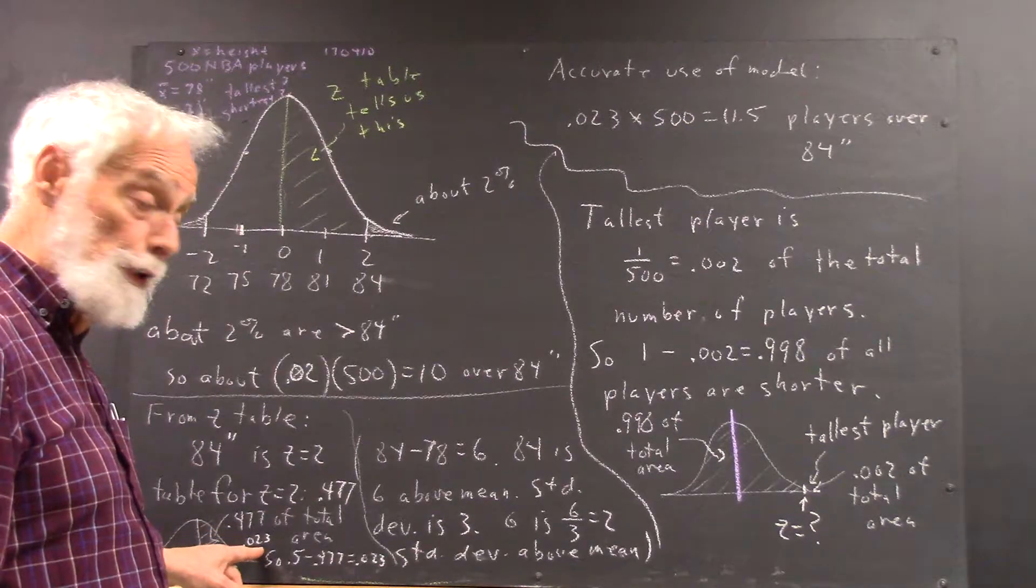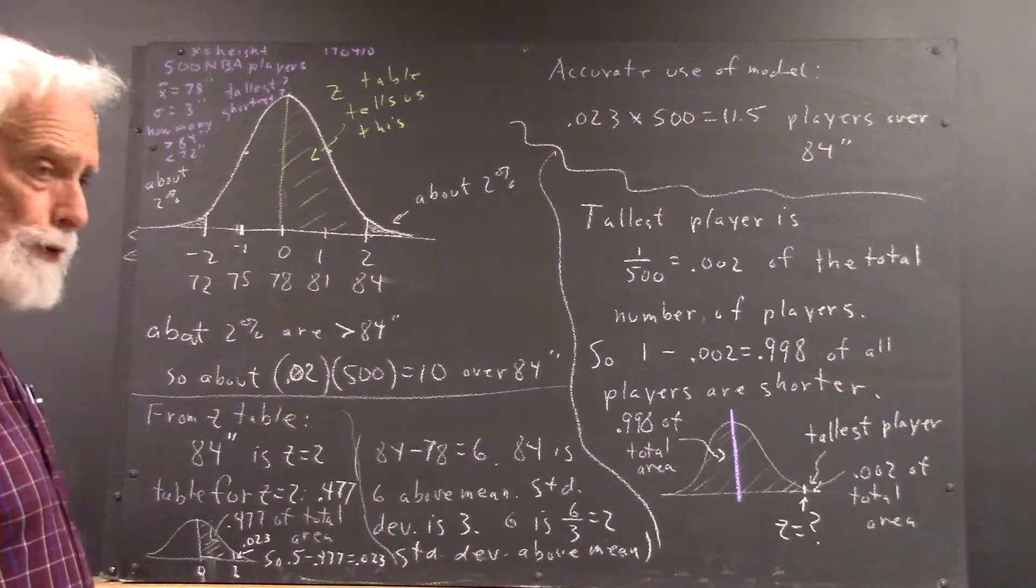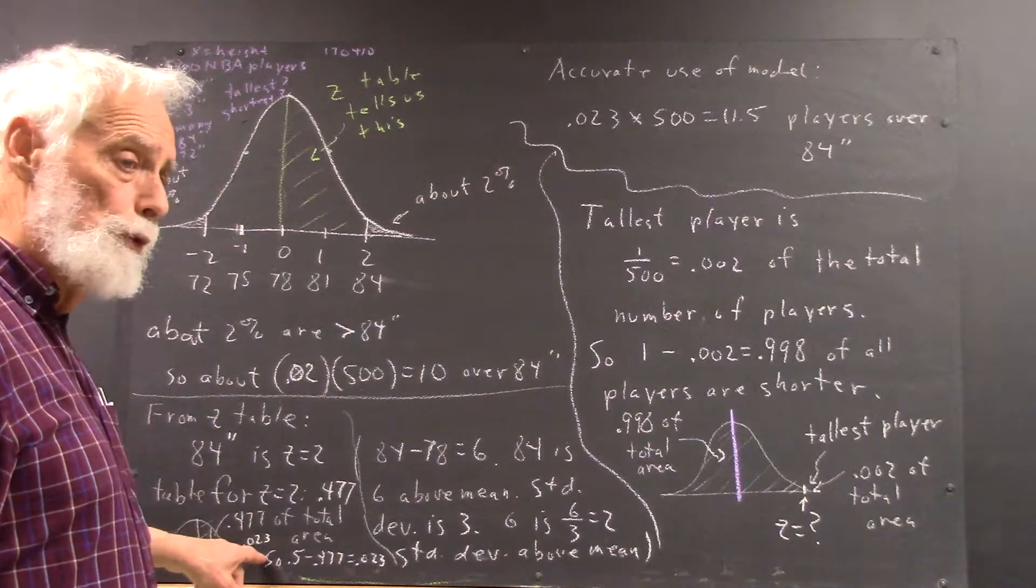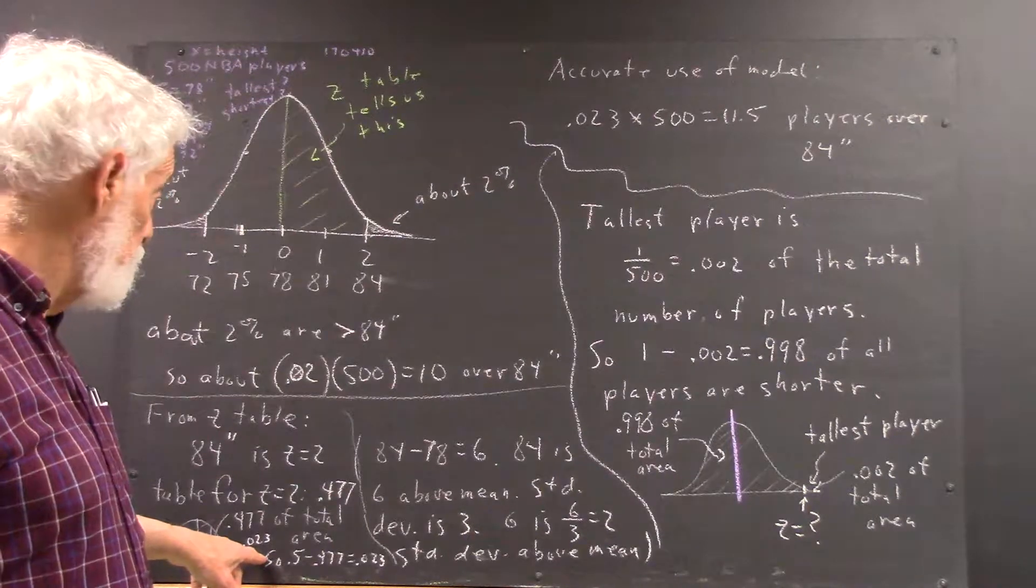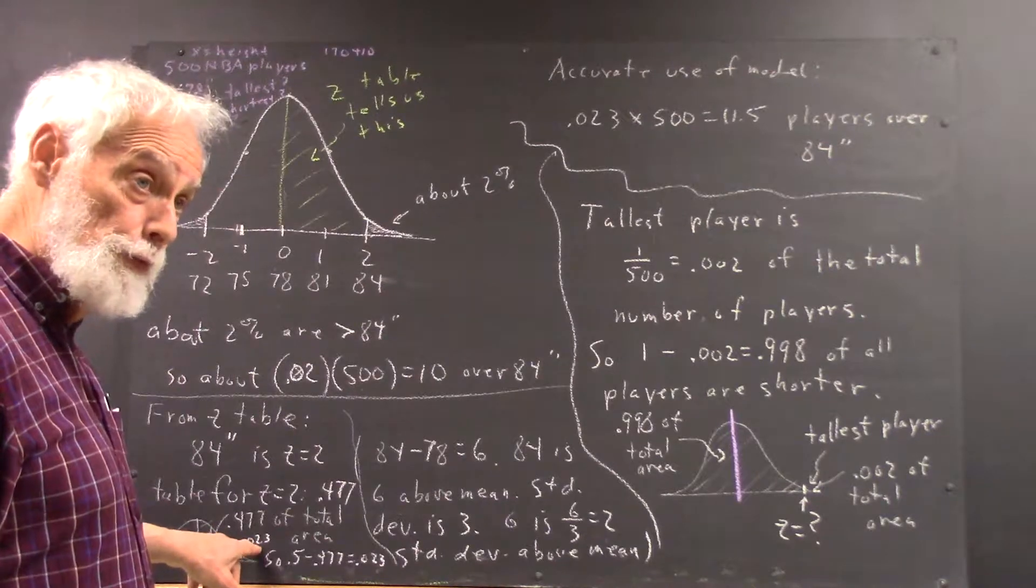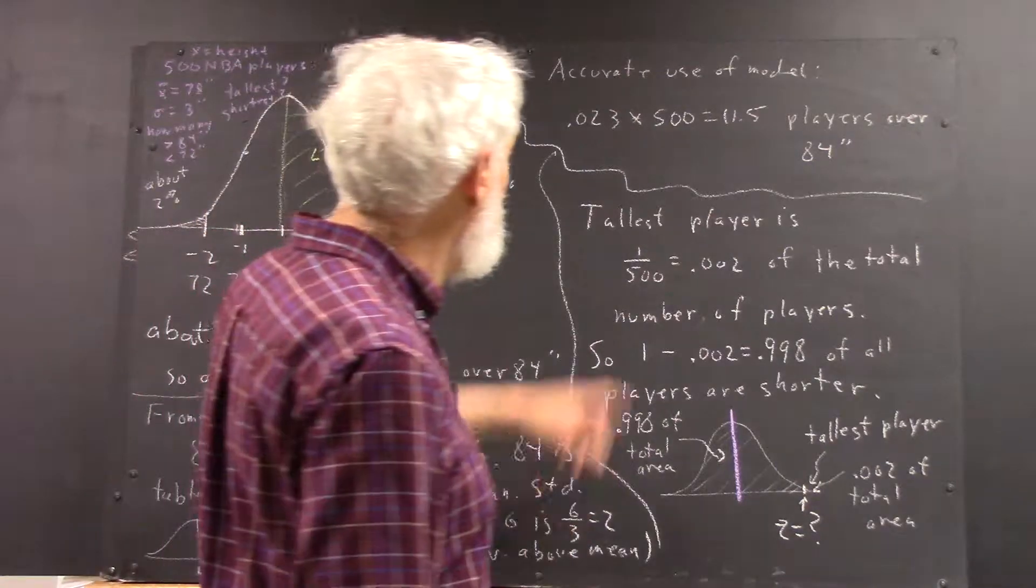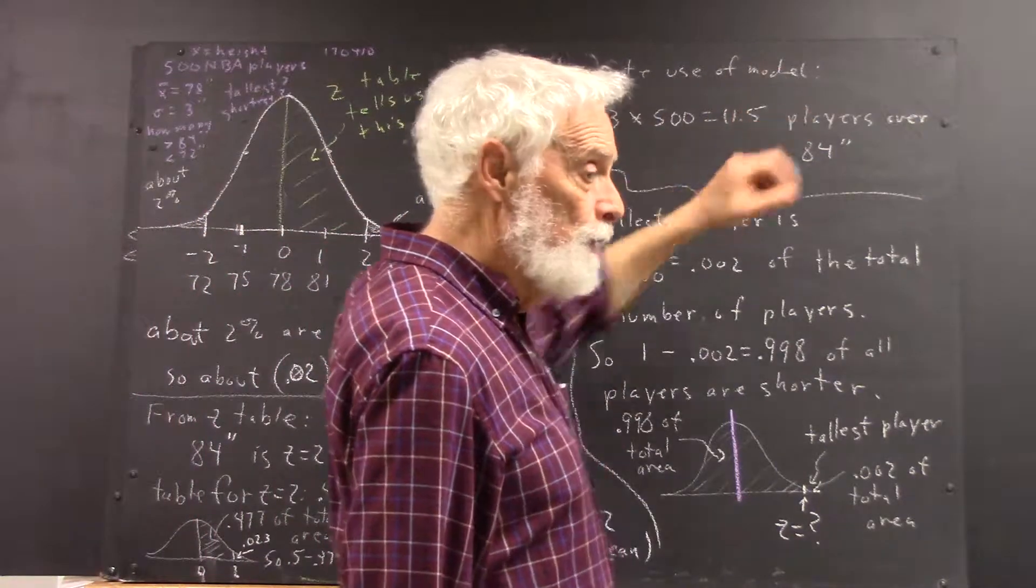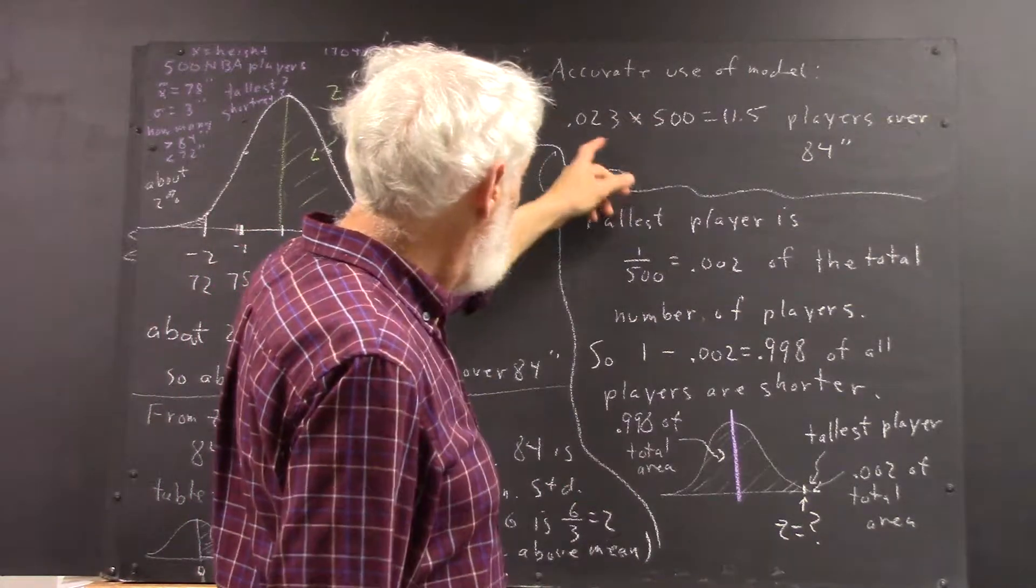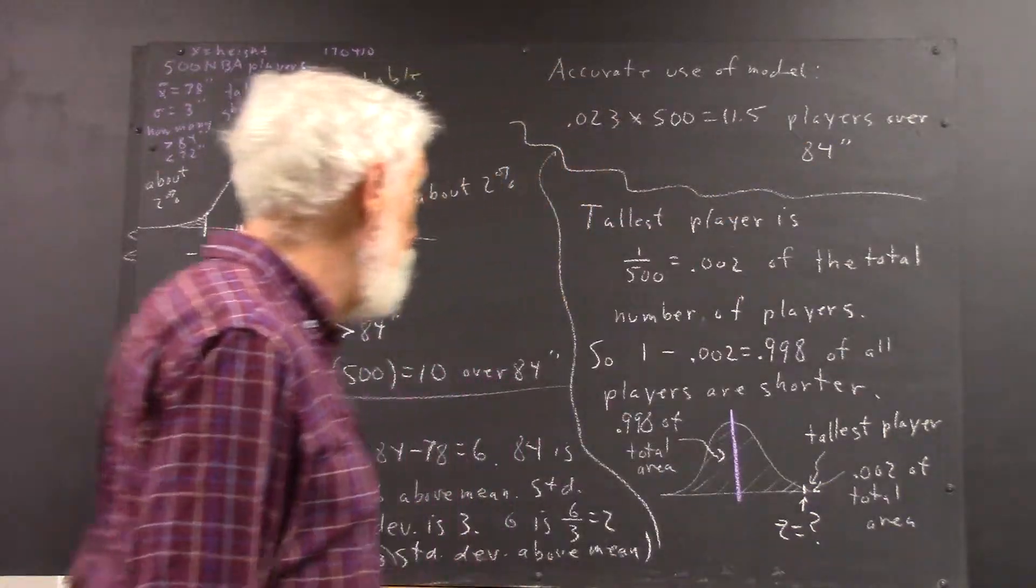That rounds off to 2%, but if you want to get a more accurate calculation, more accurate prediction, or prediction somewhat more likely to be accurate, you're going to use the 0.023, which is the same as 2.3%. Close to our 2% that we used here but not the same. If we want to refine our calculation and use the 0.023 or 2.3%, then accurate use of the model, at least accurate out to two significant figures, it's going to be 0.023 times 500, or 11.5 players over 84 inches.